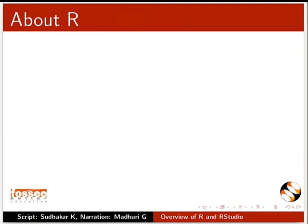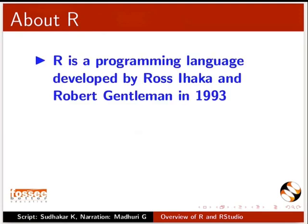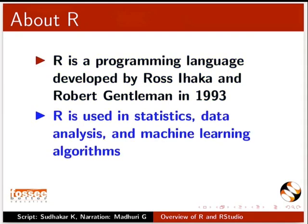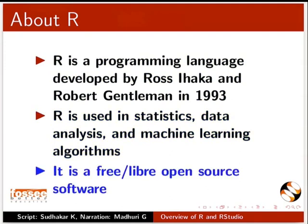Let us first see what R is. R is a programming language developed by Ross Ihaka and Robert Gentleman in 1993. R is used in statistics, data analysis, and machine learning algorithms. It is a free, open-source software.